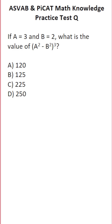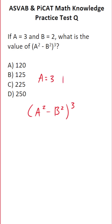This math knowledge practice test question for the ASVAB and AFQT says: if a equals 3 and b equals 2, what is the value of a squared minus b squared, to the third power? So we're going to be evaluating the expression a squared minus b squared to the third power when a equals 3 and b equals 2.